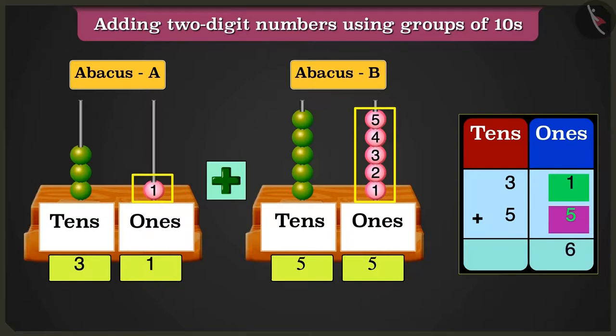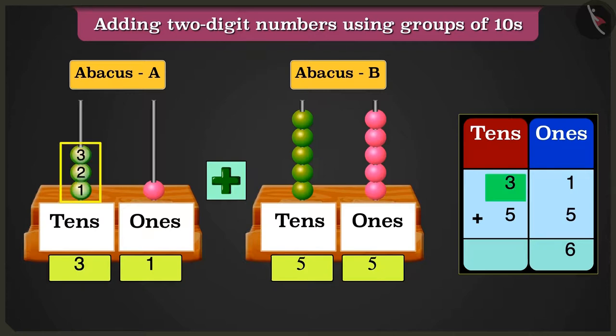Now in the box of tens, adding 3 tens and 5 tens, count after 3: 4, 5, 6, 7, and 8 tens is what we get.